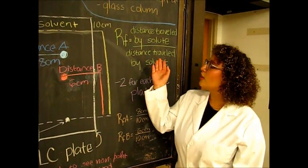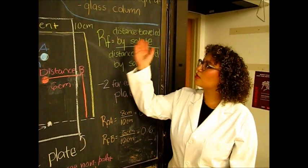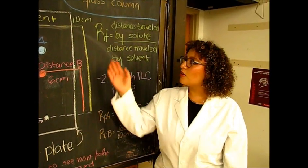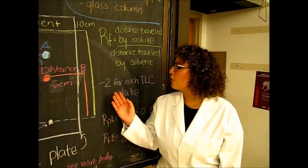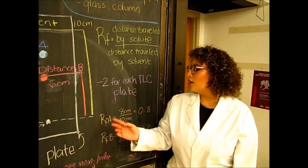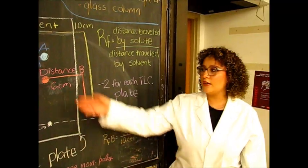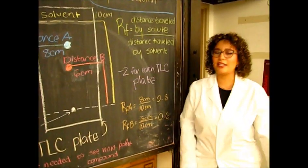Our retention factor formula is distance traveled by the solute over the distance traveled by the solvent. We will be calculating two RF factors for each TLC plate. Here we have an example of RF A and RF B. This is how you calculate it.